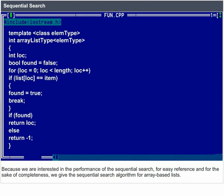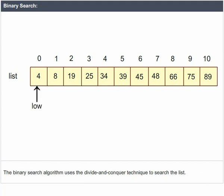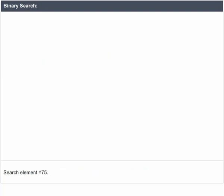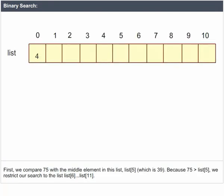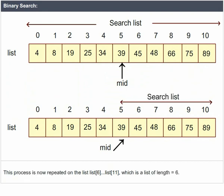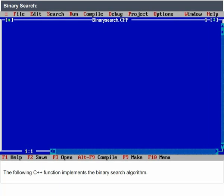Sequential search, also called linear search, always starts at the first element and continues until either the item is found or the entire list is searched. Binary search is more efficient for large lists — on average, sequential search searches half the list. The binary search algorithm uses divide and conquer: the search item is compared with the middle element; if found, the search terminates. Example: search for 75 — compare with the middle element, list[5] = 39; since 75 > 39, restrict search to list[6] through list[11] and repeat. A C++ function implements this binary search algorithm.